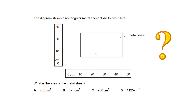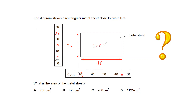The correct answer is A. Reading the rulers: the first side starts at 5 and ends at 25, giving a length of 20. The markings go 5, then a line halfway to 10, so 5, 10, 15, 20, 25. The second side starts at 10 and ends at 45, giving a length of 35. Area = length × width = 20 × 35 = 700 cm².